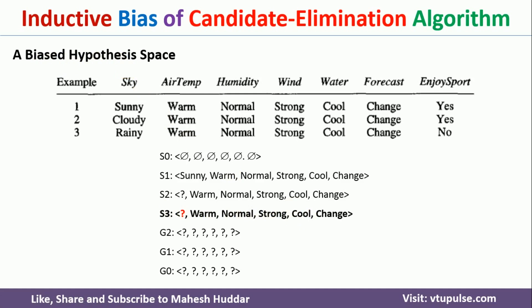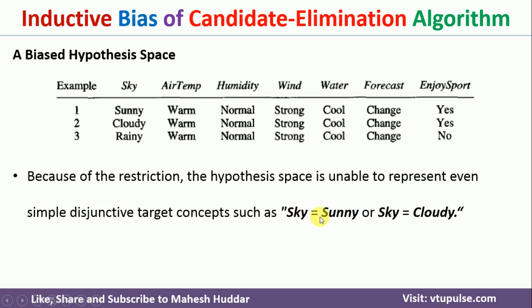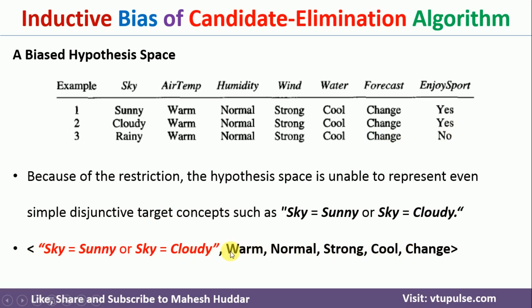This is why we cannot consider only the conjunction of attributes. If we look at only the first attribute, whenever sky is sunny or cloudy, the person is enjoying. Rather than generalizing sunny directly to a question mark, we should write: sky equals sunny OR sky equals cloudy. In that case, it would not match rainy — no match means classified as negative, which is exactly what we expect. So the hypothesis should include a disjunction of attribute values, not just a question mark.